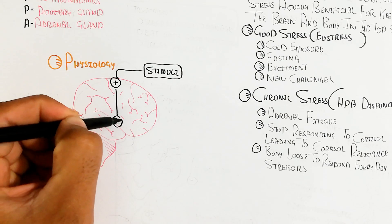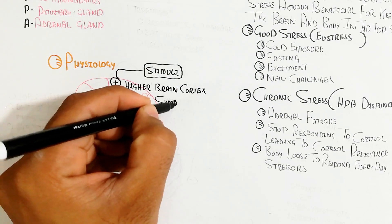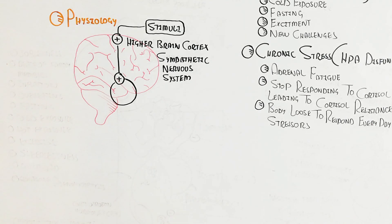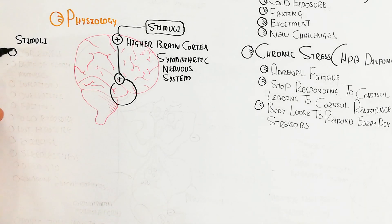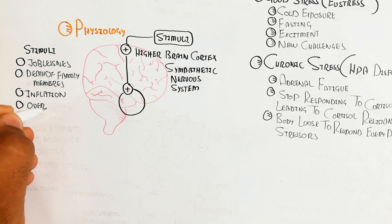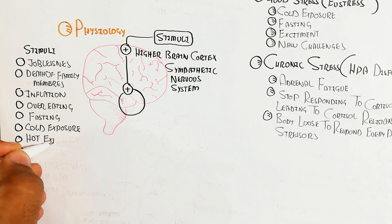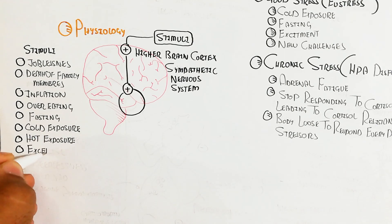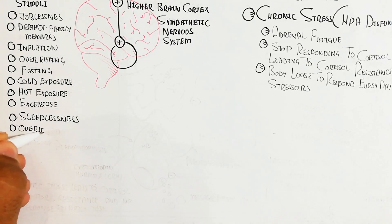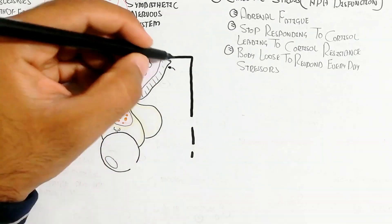Whenever stimuli trigger the higher brain cortex — the cerebral cortex — this leads to triggering the hypothalamus through several mechanisms, including sympathetic nervous system activation. Stimuli include joblessness, death of family members, inflation, overeating, fasting, cold or hot exposure, hard exercise, sleeplessness, high workload, and increased glucagon when insulin decreases.